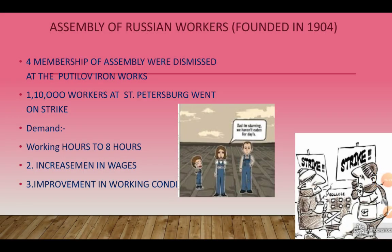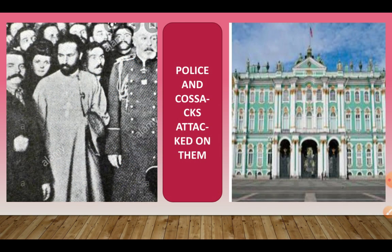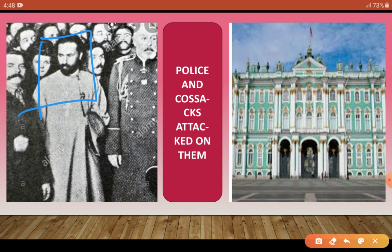This workers' strike was led by Father Gapon. Father Gapon reached the Winter Palace, but the king did not want to meet them. He called in the police and Cossacks and had them attack the crowd of workers. The police and Cossacks attacked without hesitation — 100 workers were killed and 300 workers were wounded. That day was a Sunday, and because of this, this incident is known in history as Bloody Sunday.